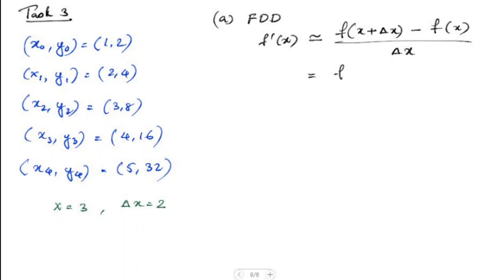Our x value is 3 plus Δx is 2 minus x is 3 divided by Δx is 2. That gives us f(5) minus f(3) divided by 2.